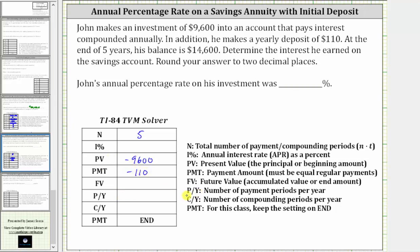The future value is the ending amount, or accumulated value, which in this case is $14,600. This is positive because it would be money coming back to John if he cashed out the account. The number of payment periods per year and the number of compounding periods per year are both one, because the interest is compounded annually and he's making yearly deposits.